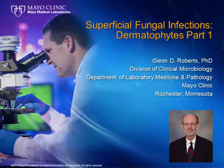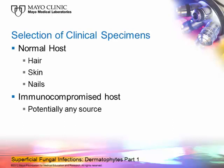Today we're going to talk about the subject of superficial fungal infections. These include the dermatophytes that can infect the normal host as well as the immunocompromised host. With the normal host, they often involve the hair, skin, or nails. With the immunocompromised host, since the immune system is diminished, these dermatophytes can attack potentially any site, even causing systemic disease.